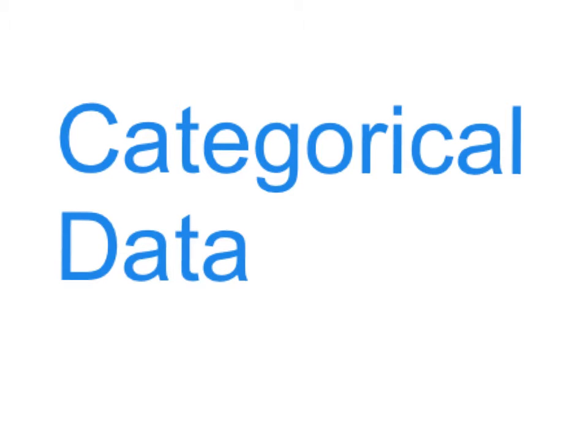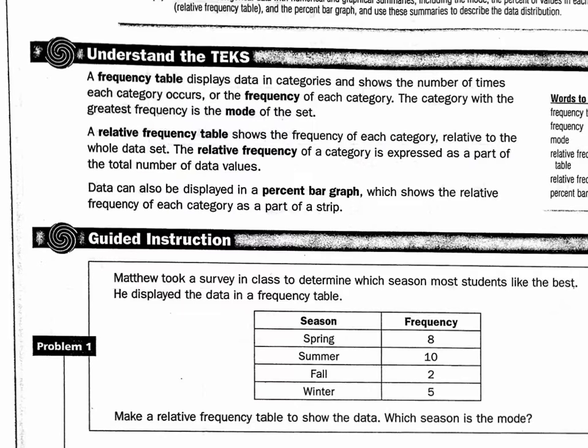Okay, today we're going to be doing categorical data, which is when we start putting everything together. Right here is where it talks about what we're going to be doing with the information. The frequency table is when it talks about the data in terms of the frequency or how many times each occurs. A relative frequency table is relative to the total numbers, and then a percent bar graph shows the relative frequency as part of a strip.